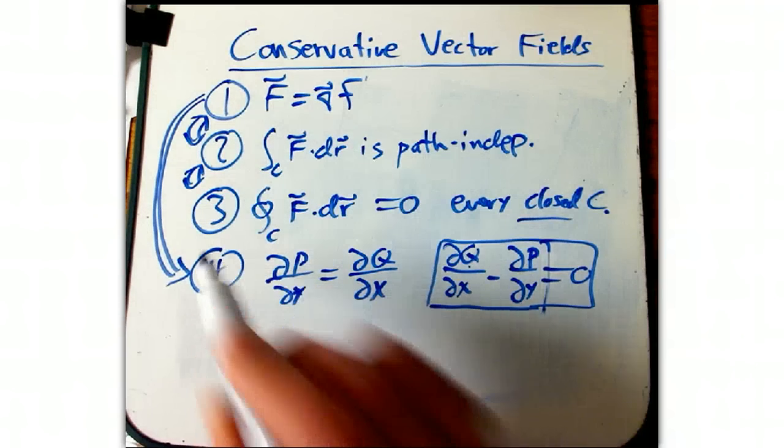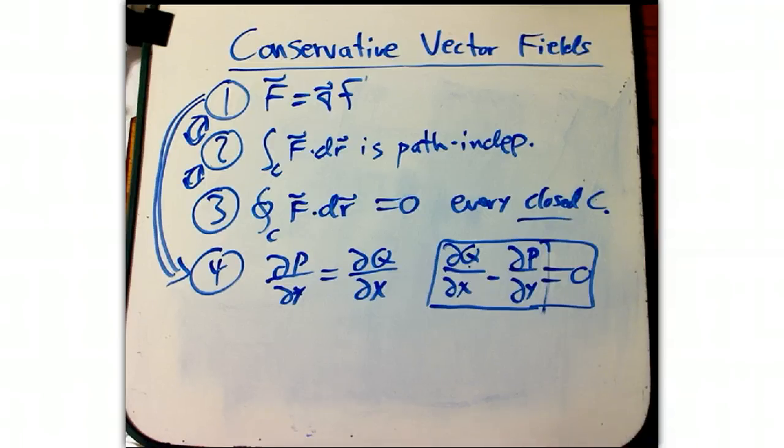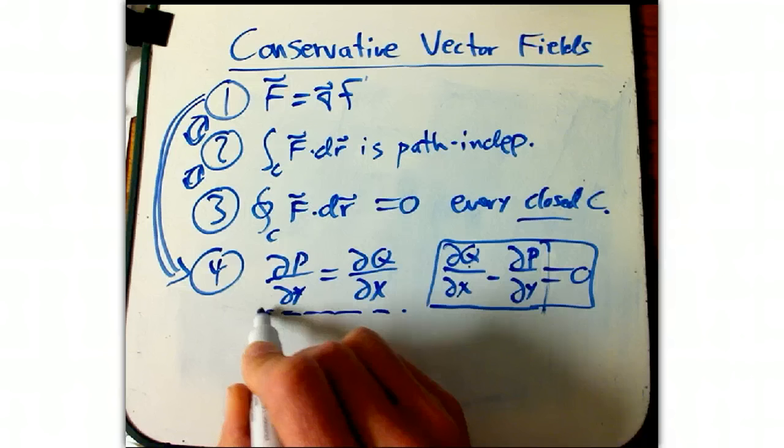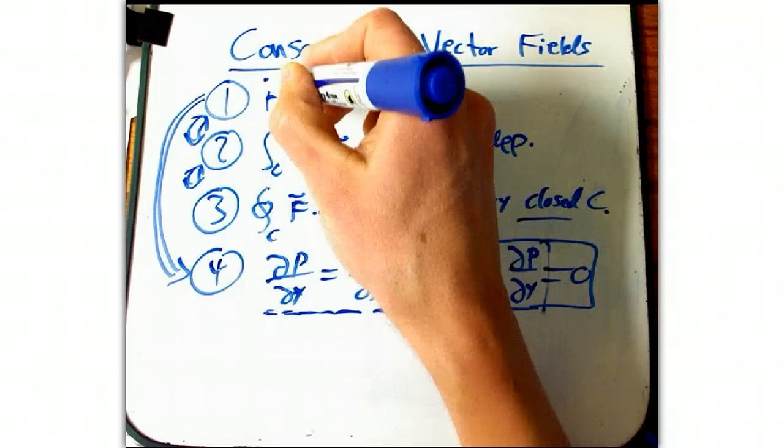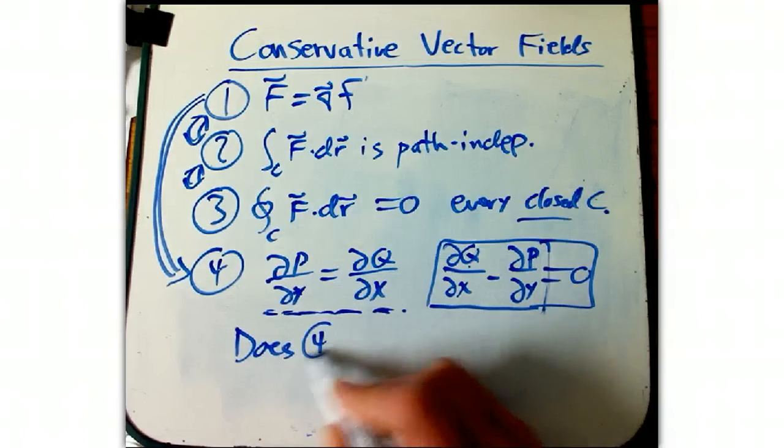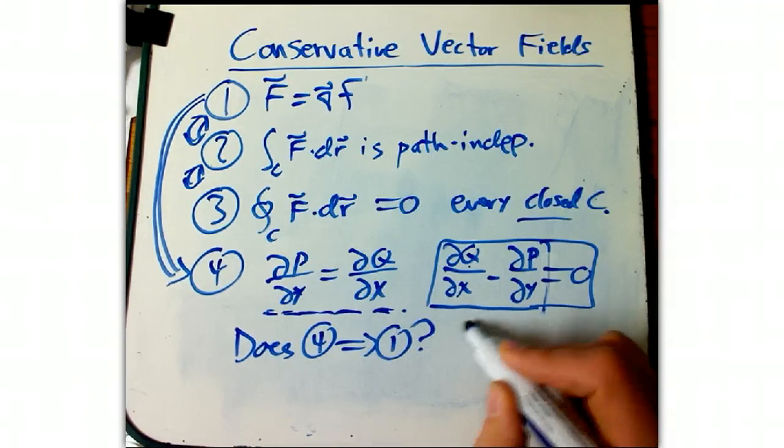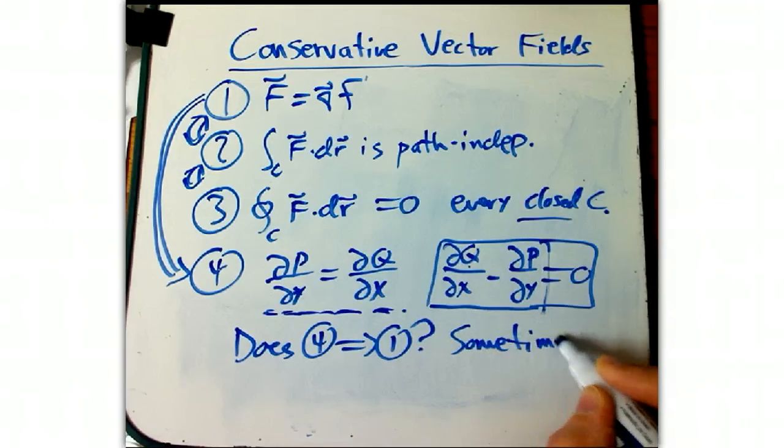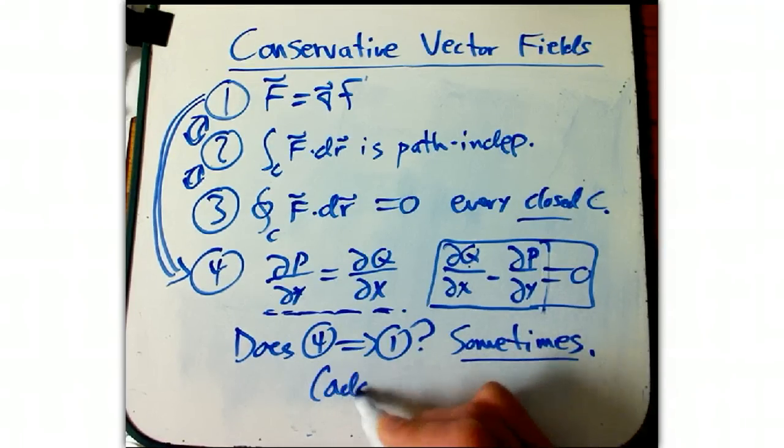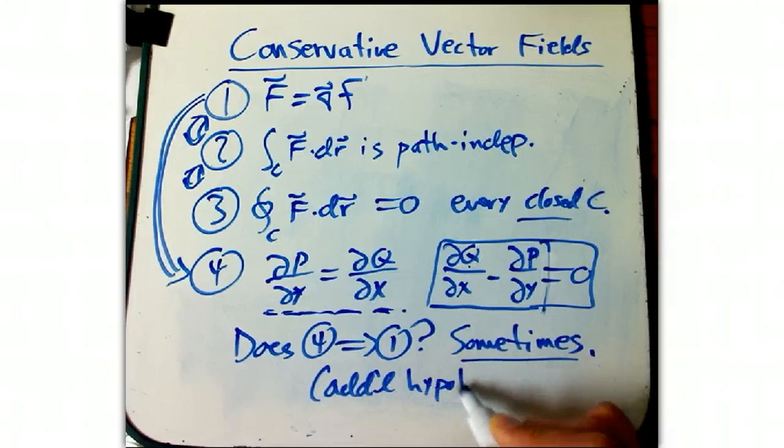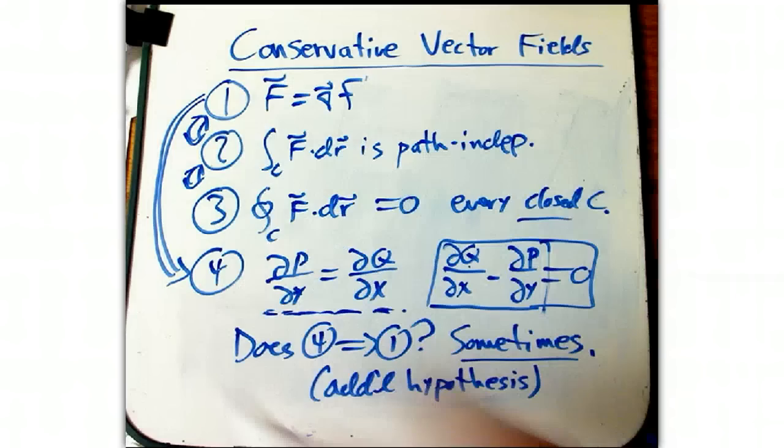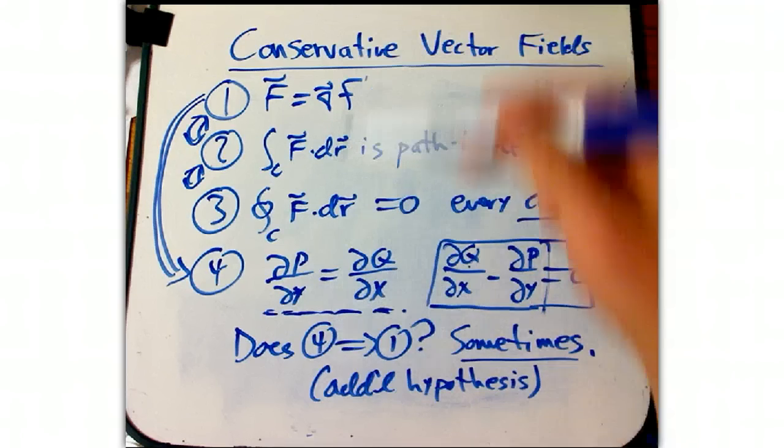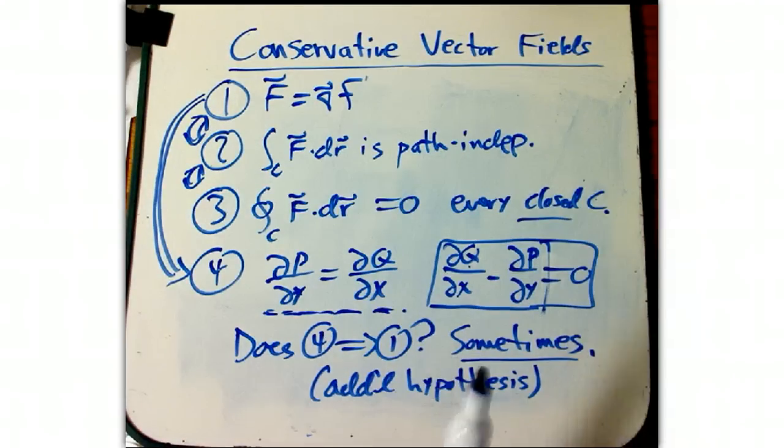But unfortunately, that's useful, but it's not the real prize. The real prize would be, suppose I do this. This is an easy thing to check a lot of the time. Suppose I did this, do I automatically know that it must be conservative? Does four imply one? And the answer is, it depends. Sometimes. Or in other words, if there's an additional hypothesis, a very interesting additional hypothesis, then you can do it. And that'll have to be a tease for later. Okay, so I wanted to get that scheme. I like putting these all together in one list, which the book does not, and clarifying the logical relationships. That's the main purpose of this video. And we'll do some examples in another shorter video.